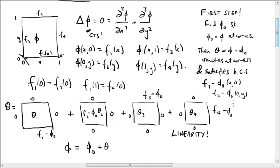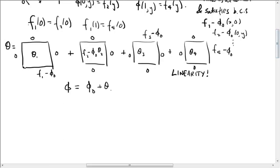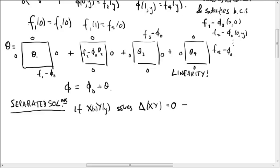So what kind of functions can we use to solve this equation? Well, I'm going to first of all write down some very special solutions called separated solutions. These are solutions of the form X times Y, where X is a function only of little x, and Y is a function only of little y. And if this is a solution, so if this solves delta of XY equals 0, then...